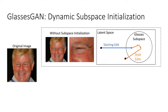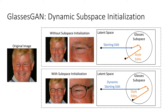Interestingly, we found the glasses subspace to be relatively uniform between identities, but to have substantial variation in the magnitude of the vector needed to move the identity into the subspace. Therefore, we developed a method to ensure our starting edit places as close to the center as possible. We call it dynamic subspace initialization, and it works by dynamically adjusting the strength of the modification vector until the pixel area of the glasses frames reaches a consistent value for all captures. In our experiments, we found this to reduce the occurrence of disappearing glasses in subsequent edits and to allow for more reliable chained edits.